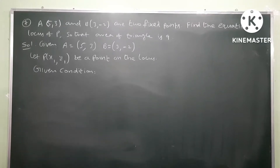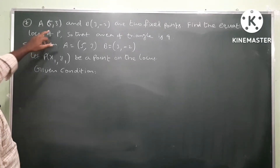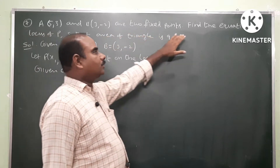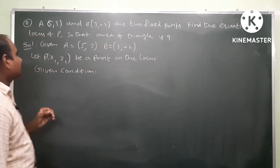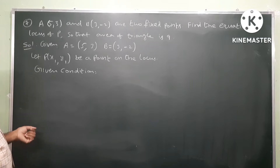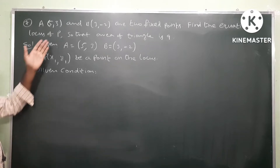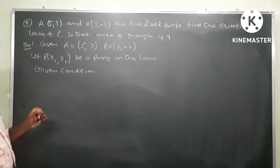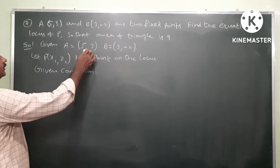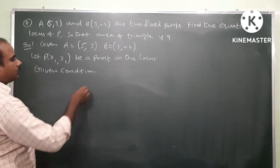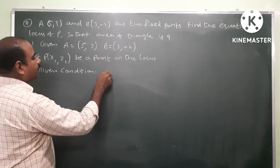Problem number seven, roman two. A(5,3) and B(3,-2) are two fixed points. Find the equation of locus of P such that the area of triangle PAB is nine. Let P(x1, y1) be a point on the locus. The given condition is that area of triangle PAB equals nine.